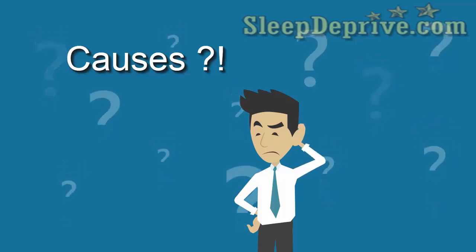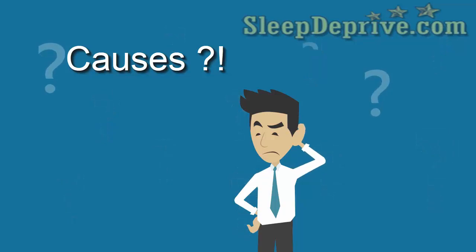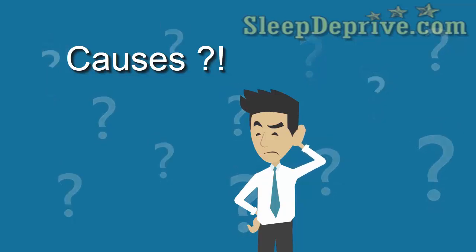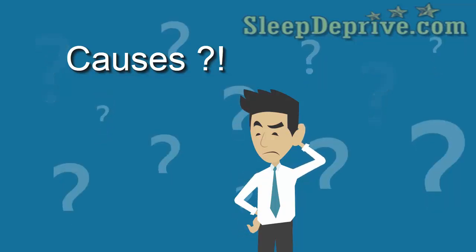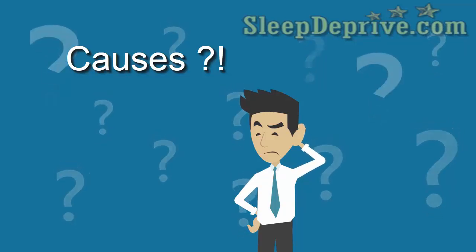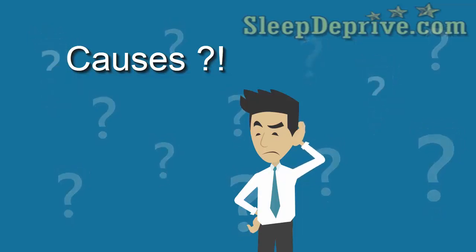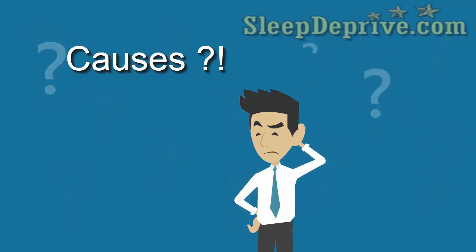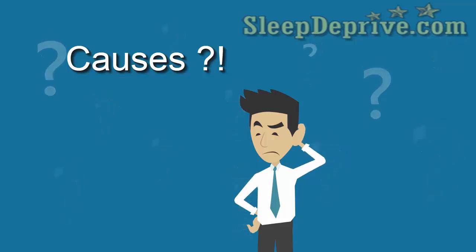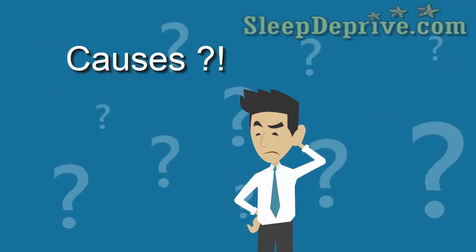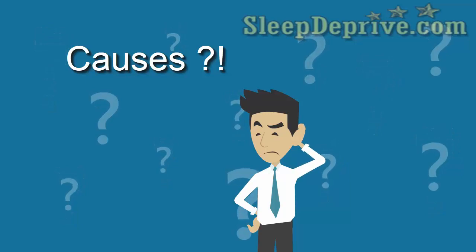The brain senses the inability to breathe and the person wakes from sleep so that he can reopen the airway. The person might snort, choke, or gasp, and this can be repetitive. As discussed earlier, central sleep apnea occurs when the brain fails to transmit signals to the breathing muscles. This stops breathing for a short period of time. When this happens, people wake up with shortness of breath or have a difficult time getting back to sleep or staying asleep.